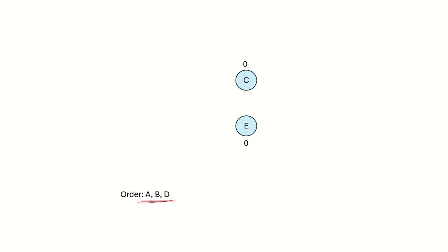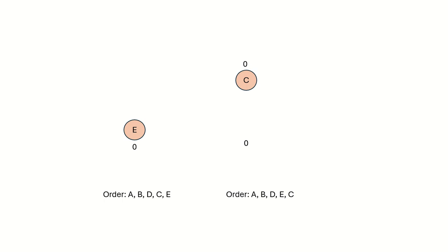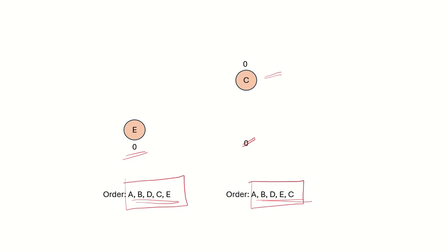Now we are left with two vertices both with in-degree 0. We can choose either of these two vertices to come first in the ordering. If we choose C, the ordering continues with C then E. If we choose E first, the ordering continues with E then C. So there are two valid topological orderings: one is A, B, D, C, E and the other is A, B, D, E, C.